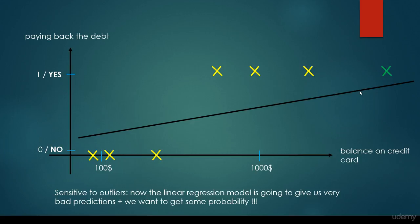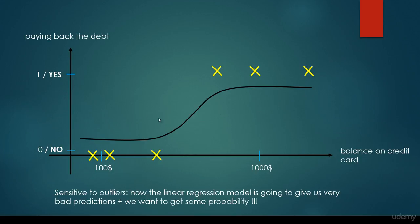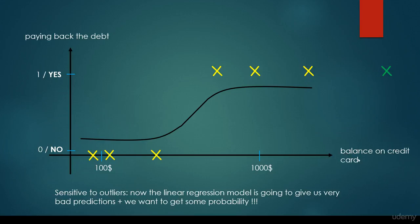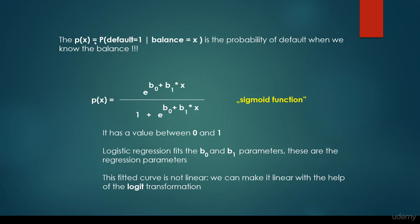And if you may recall, linear regression is not able to tell anything about the given probability. It's just going to make some predictions. So a better solution would be to get something like this, and this is the so-called sigmoid function or logistic function. It is a bit better solution. So we would like to get the probability of that given event. X is the balance on the credit card. We would like to assign a probability to every single balance — basically, it is the probability that we default, so default is equal to 1, if we suppose that the balance is equal to X.